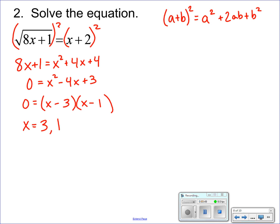Make sure that after you've squared, both of these answers work in the original equation. So √(8×3+1), does that equal 3 + 2? That's √25, which equals 5, so that works.